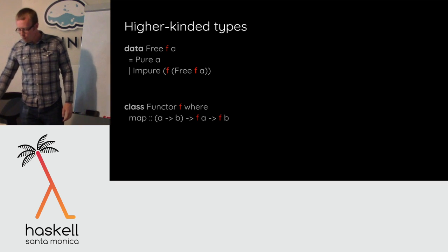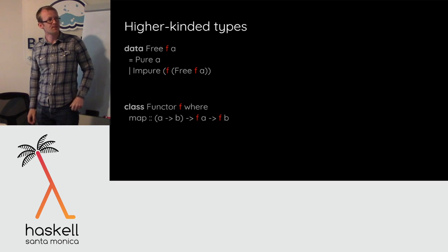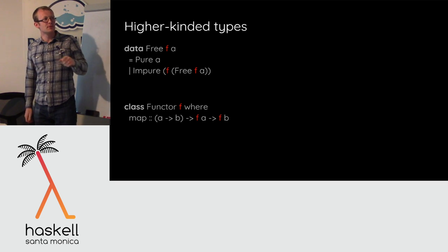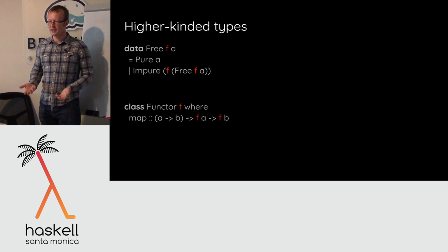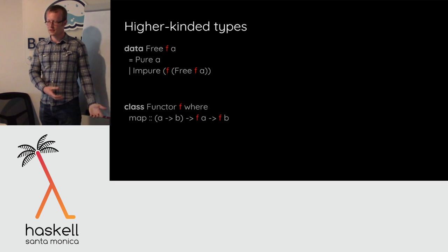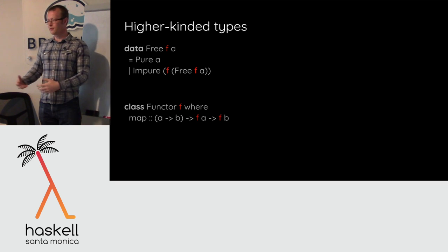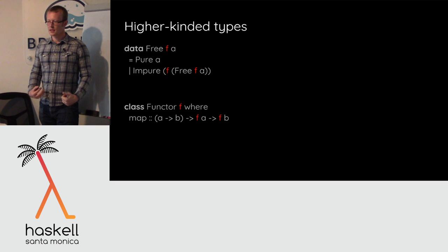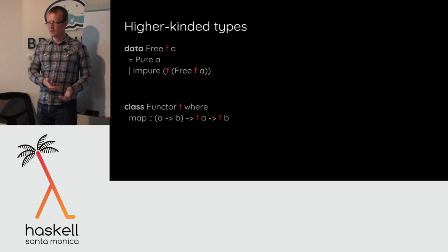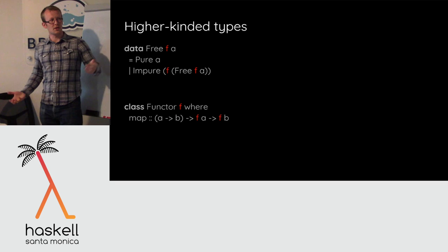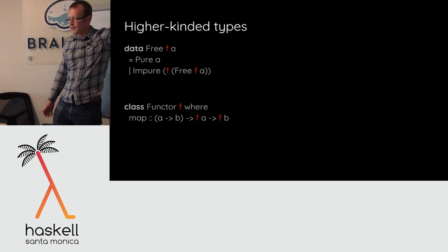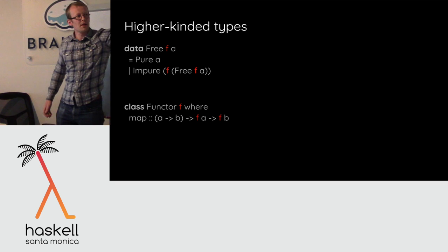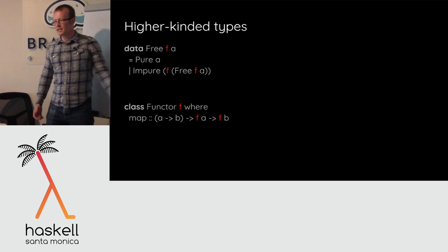When we can talk abstractly about type constructors or type constructor constructors, we say we have higher-kinded types, because we can classify the different sorts using this notion called kinds. There's essentially type inference going on one level up, inferring kinds. Just like types characterize values, kinds characterize types and type constructors. The kind of List is different from the kind of integers — one is a type, one is a type constructor. We can do kind inference just like type inference.